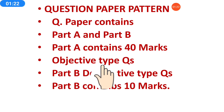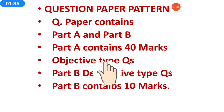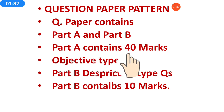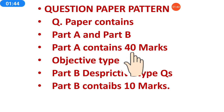If we say objective type, it means MCQs, fill in the blanks, one word, true-false, match the column — all these kinds of questions could be there in the objective type questions. All these type of questions will be of 40 marks, and in objective type questions, each question will be of 1 mark. MCQs, fill in the blanks — all will be of 1 mark each. In this way, it will cover 40 marks.